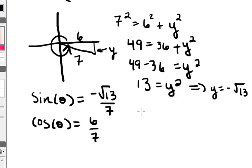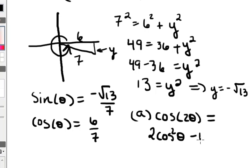Alright, so part A was to find the cosine of 2 theta. So in this case, I need to plug in one of my formulas for cosine of 2 theta. So remember one of them was 2 cosine squared of theta minus 1.